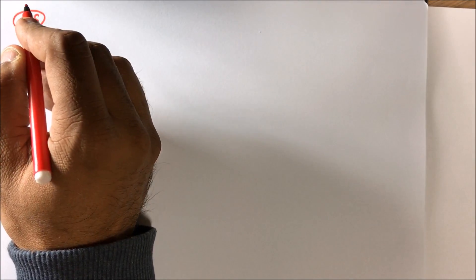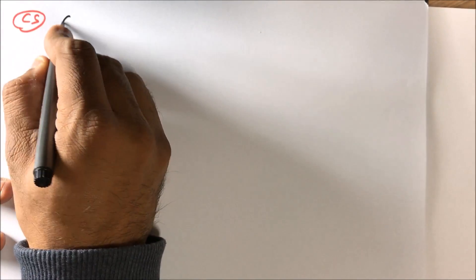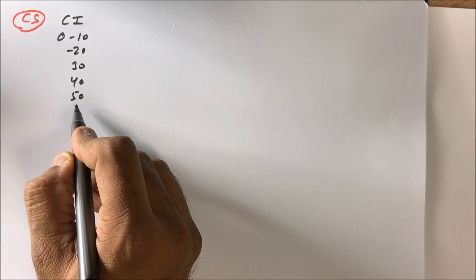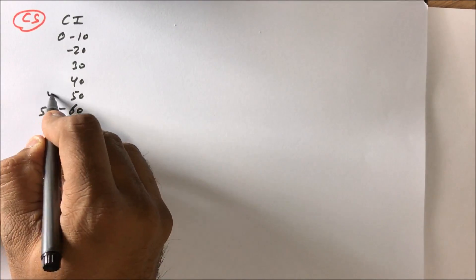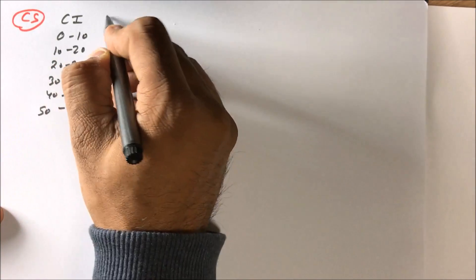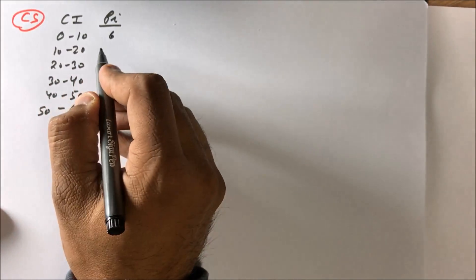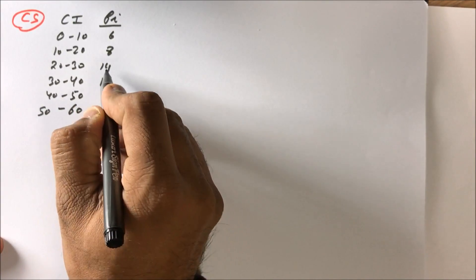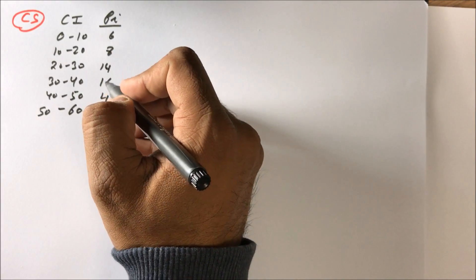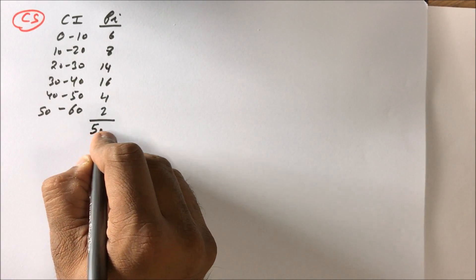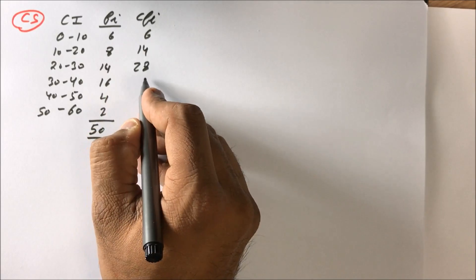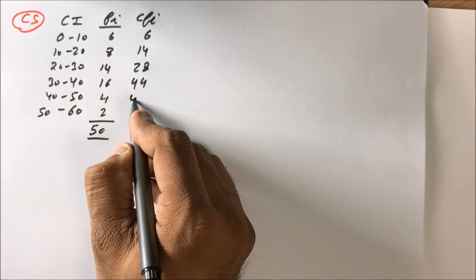Now for continuous series. We have class intervals: 0–10, 10–20, 20–30, 30–40, 40–50, 50–60. The frequencies are 6, 8, 14, 16, 4, 2, giving a total of 50. The cumulative frequencies are: 6, 14, 28, 44, 48, 50.